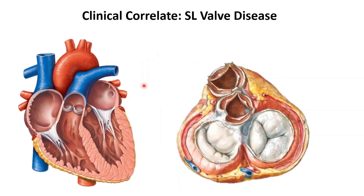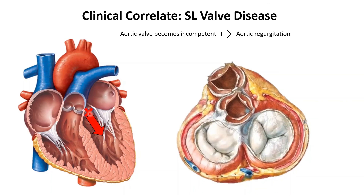Now let's move on to the clinical aspects of the heart valves once again. If the aortic valve were diseased and did not remain competent, it would result in backflow of blood from the aorta into the left ventricle — a situation called aortic regurgitation. Another example of valvular heart disease would be if the aortic valve were narrowed and allowed less blood to flow through it — this situation would be called aortic stenosis.